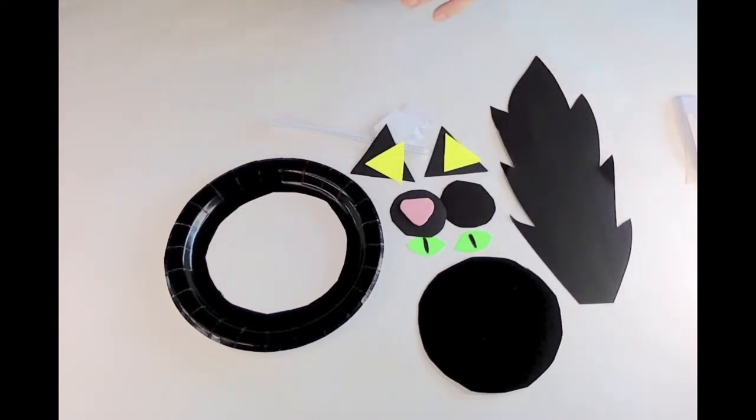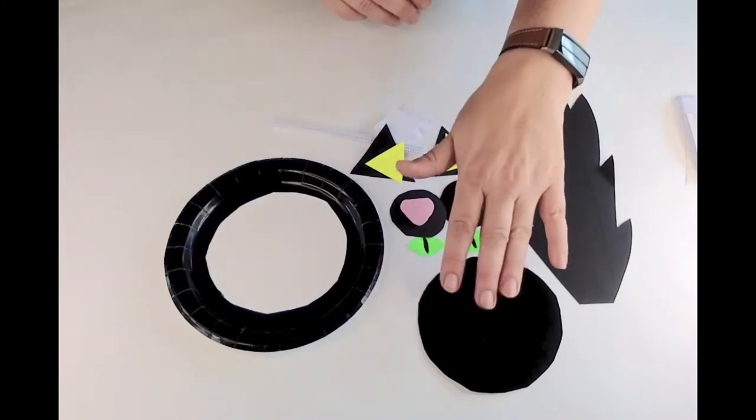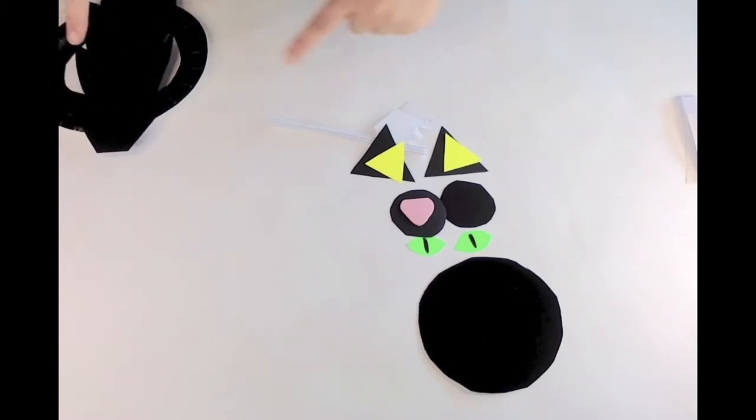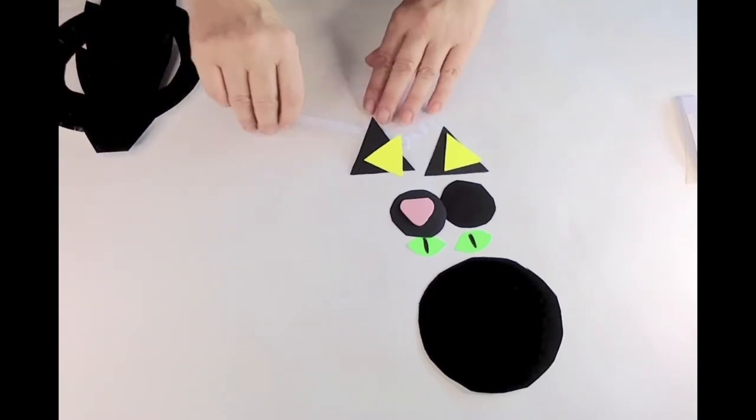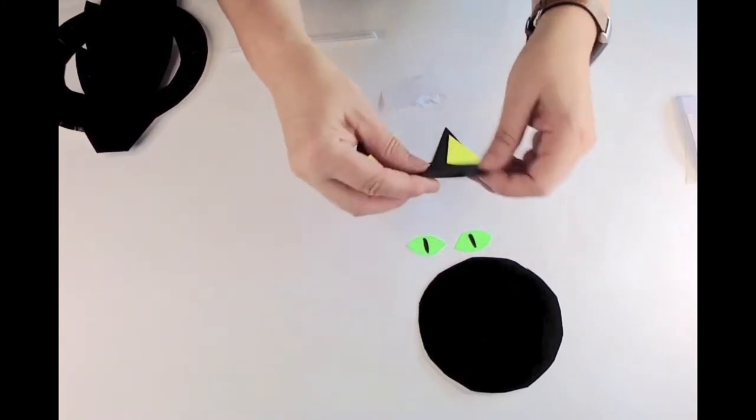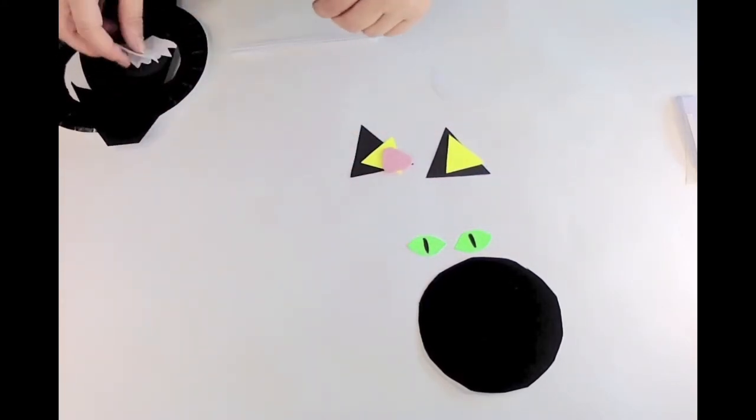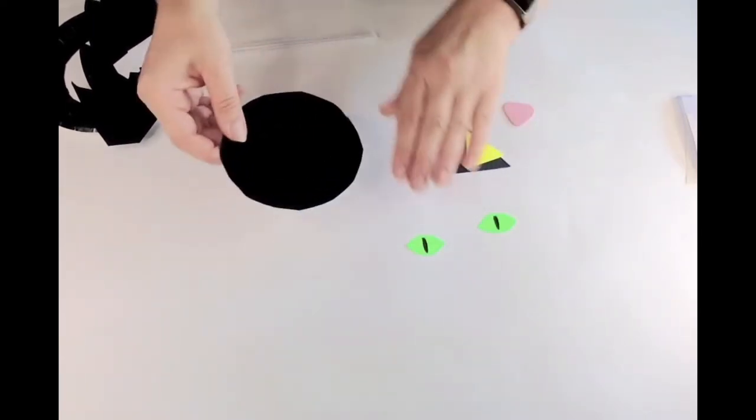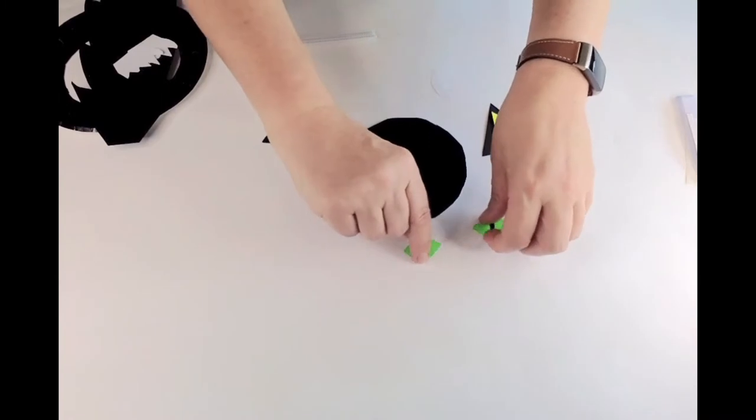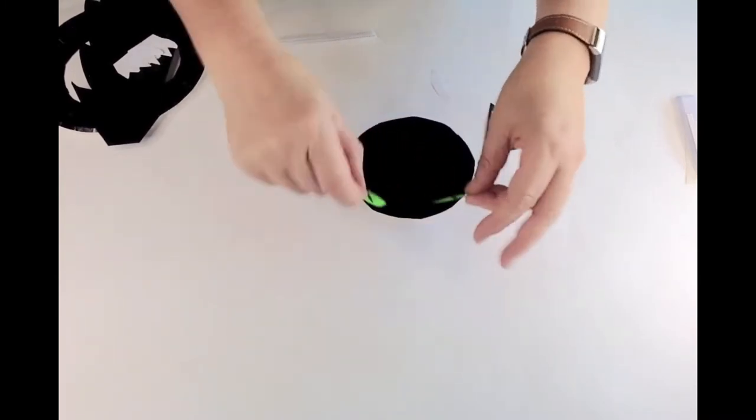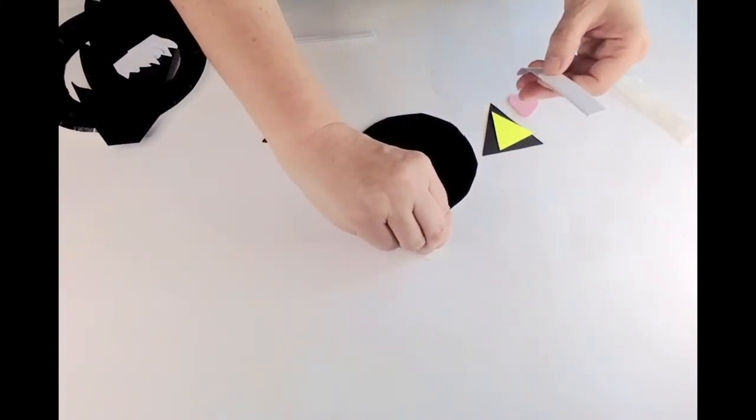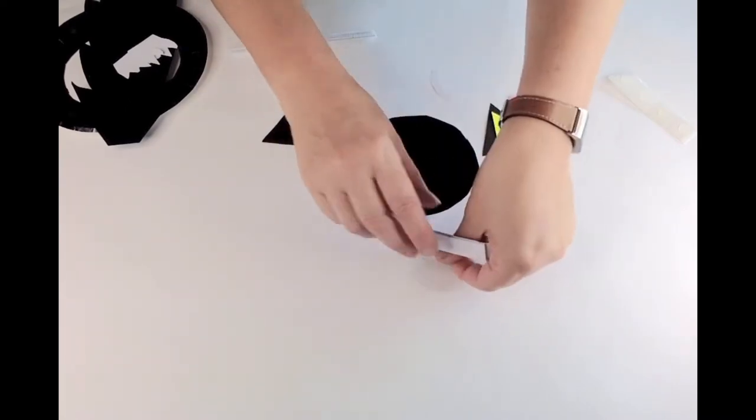So the first things we're going to do is assemble the face. I'm going to just move the tail and the outer body, the claws and the feet out the way. So we're just left with the items that will go on the face. So the first thing I'm going to do is grab the eyes.